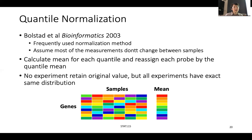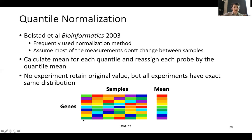Another normalization method that is really very widely used in biological systems is called quantile normalization. Again, it assumes that most of the measurements don't change between the samples. Suppose you have a big matrix where each column is a different sample and each row is a different gene. What it does is create an additional column, and in each row it calculates the average of the top percentile from each of the samples.